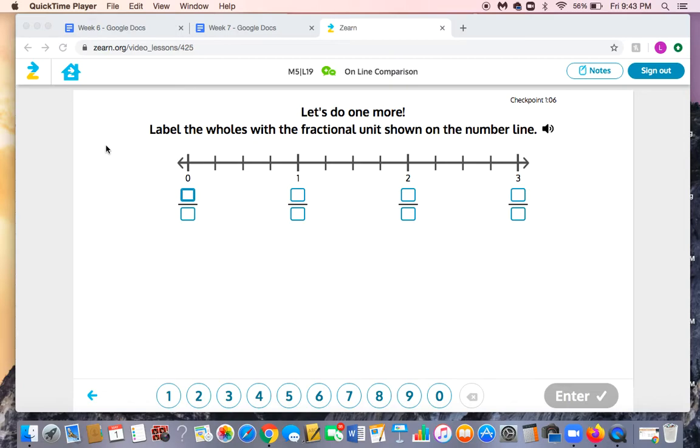So on this number line, we have to figure out what these fractions are going to be. Our first step is we need to figure out how many sections or parts there are between 0 and 1 whole, or between 1 and 2. It should be the same between each set of whole numbers.